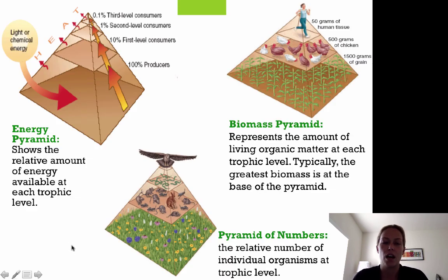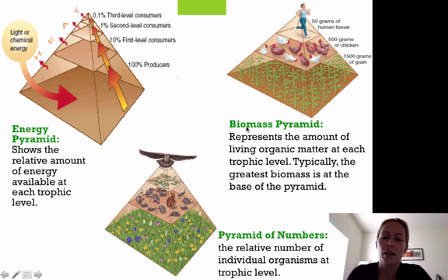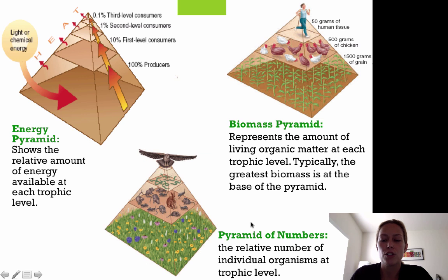The energy pyramid shows the relative amount of energy available at each trophic level: producers hold 100%, first-level consumers have 10%, second-level consumers have 1%, and third-level consumers have 0.1% available to them. A biomass pyramid represents the amount of living organic matter at each trophic level, with the greatest biomass typically found at the base. A pyramid of numbers shows the relative number of organisms at each trophic level.